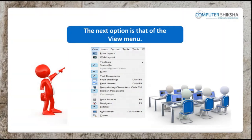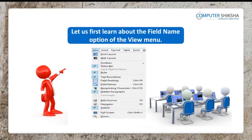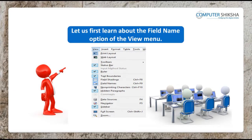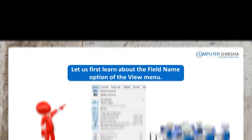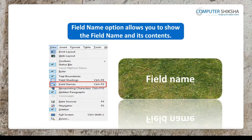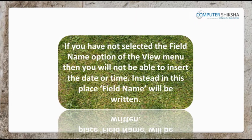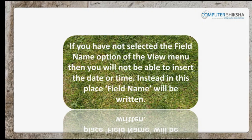The next option is that of the view menu. Let us first learn about the field name option of the view menu. The field name option allows you to show the field name and its contents. If you have not selected the field name option of the view menu, then you will not be able to insert the date or time — instead the field name text will be written in that place.